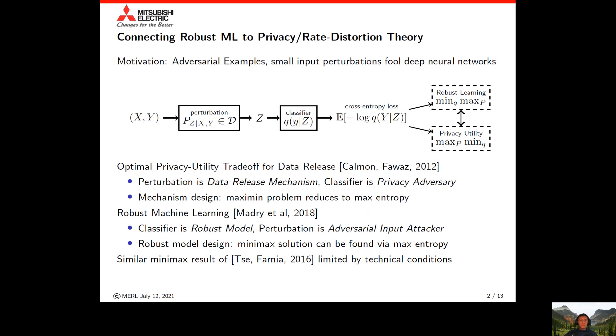Then a classifier looks at Z and tries to reconstruct the original label Y. The goal of the classifier would be to minimize its cross-entropy loss, whereas the perturbation is trying to maximize that. Depending on whether we're looking at robust machine learning or privacy utility trade-offs, we'd formulate this as either a min-max problem or a max-min problem.